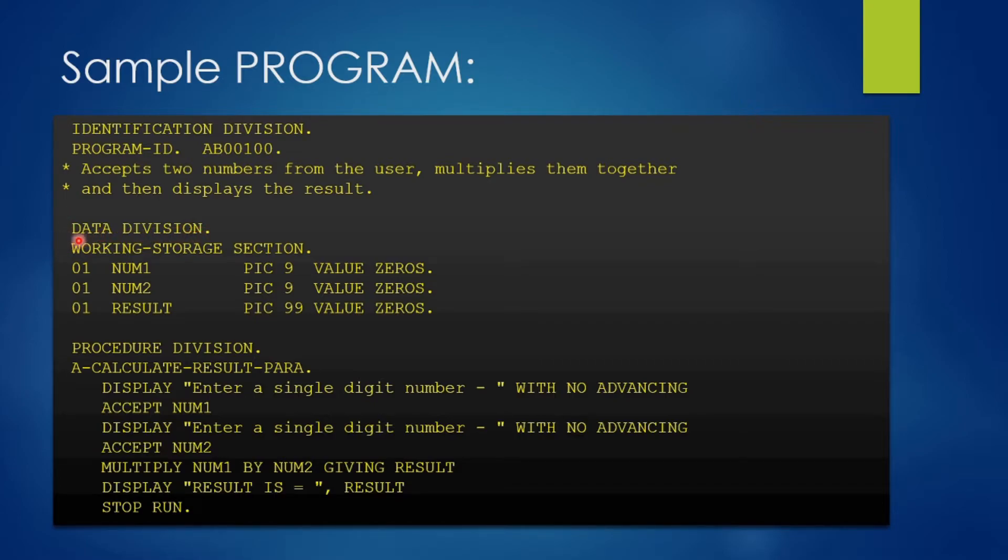Under the data division, we have coded working storage section as we are going to define some variables here. We have coded three variables all with level number one, which means they are elementary items and not part of any group.